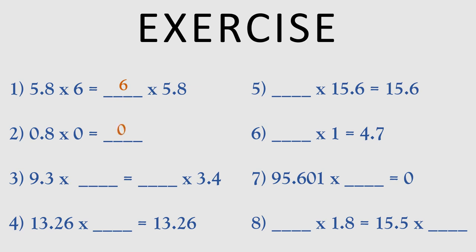Question number 3: 9.3 x dash is equal to dash x 3.4. In this question, 3.4 is given on the right-hand side but not on the left, so in the first blank we write 3.4. And 9.3 is given on the left-hand side but not on the right, so in the second blank we write 9.3. Question number 4: 13.26 x dash is equal to 13.26. We know that any decimal number multiplied by 1, the answer is the number itself. So the answer is 1.